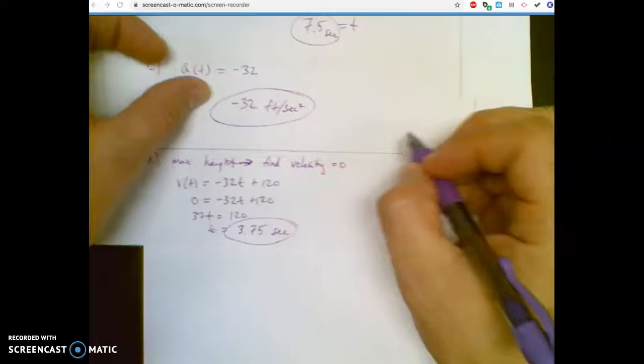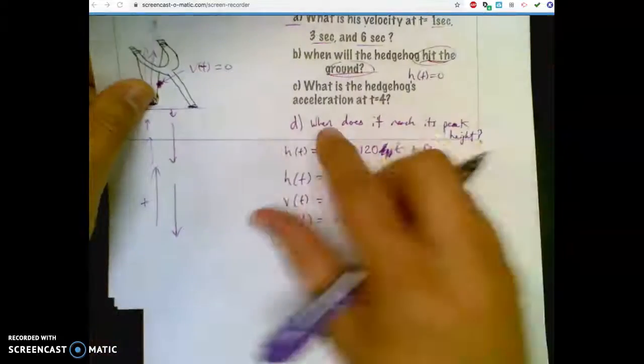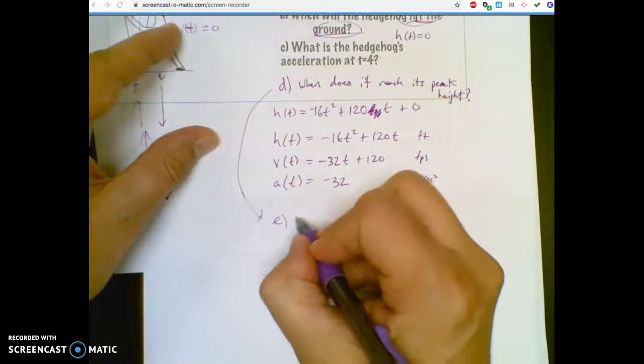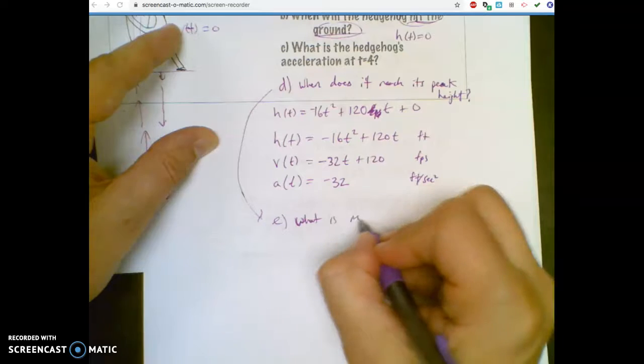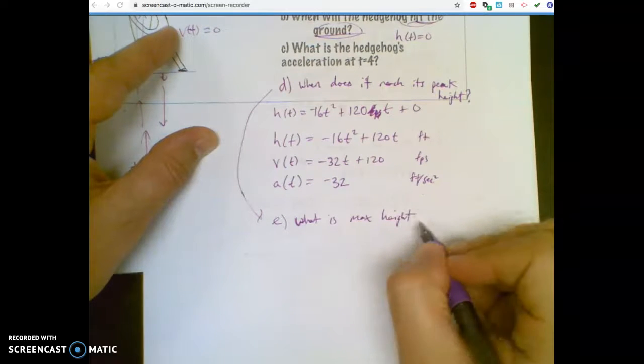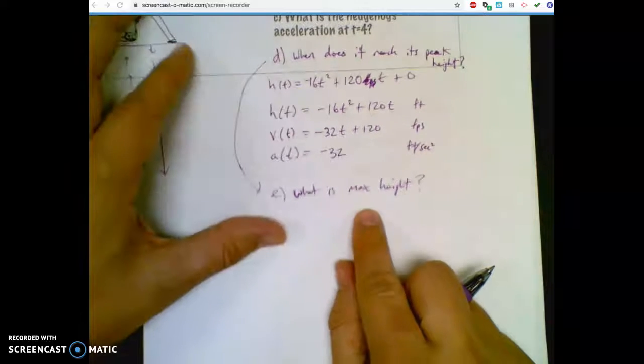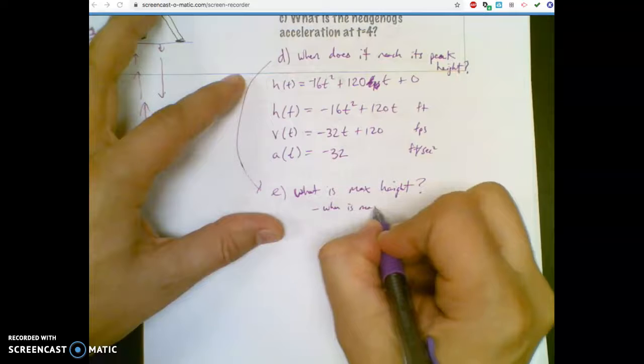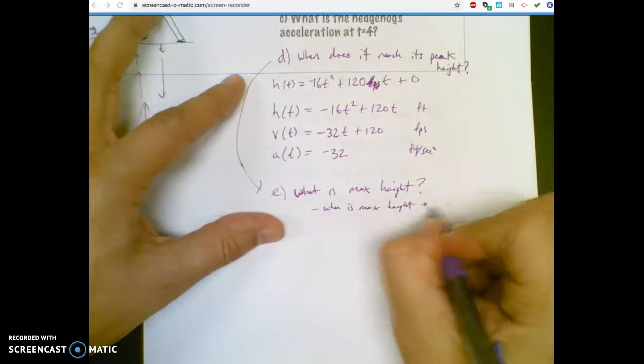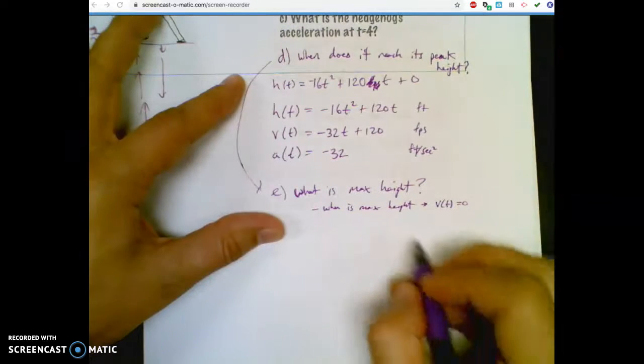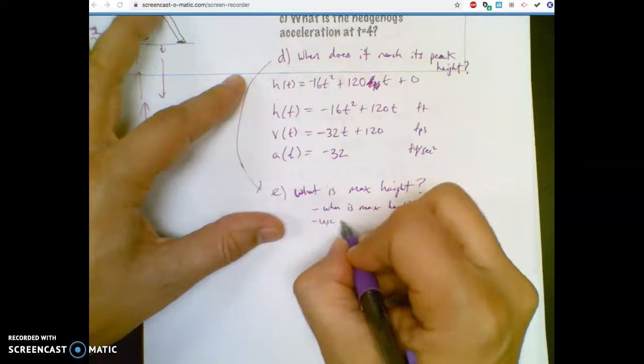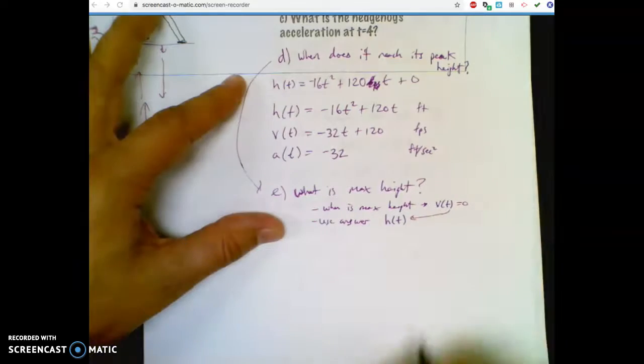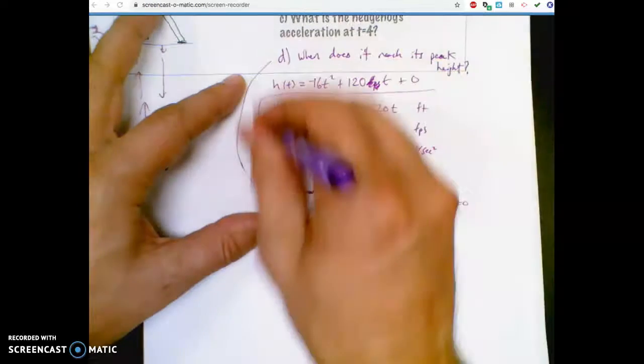Now if I added another question, it said how high does this thing go, because that could have been one. I could have asked letter D. Heck, I'm going to ask letter E. What is the max height? That's a valid question to ask. If I ever ask you what is max height, you basically have to answer two questions. When is max height? By setting the velocity to zero, and then use the answer in your height equation. I like this question, because it actually is making you use two of these equations, these important equations.